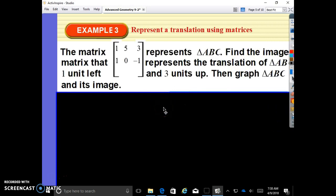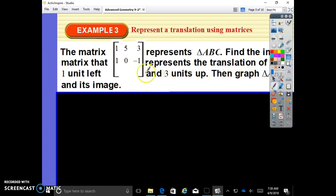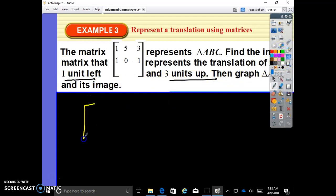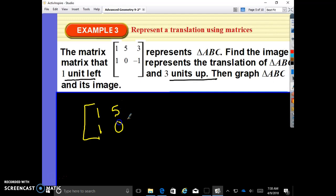The matrix 1, 1, 5, 0, 3, negative 1 represents triangle ABC. Find the image matrix that represents the translation of triangle ABC, one unit left and three units up. Then graph triangle ABC and its image. It's going one left, up three. You're taking your original. This is your A, your B, and your C. And now, what are we doing to it? We are doing a translation. And what is our translation? One to the left.